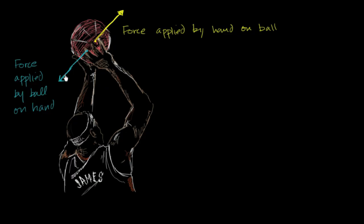And the reason why your hand isn't accelerating backwards, isn't just flopping backwards because of this force of the ball applying to the hand, the reason is because your hand or your fingers have other forces acting on it that counteract this force.